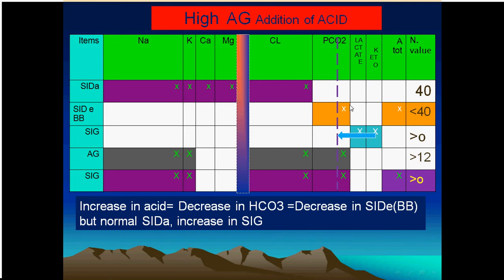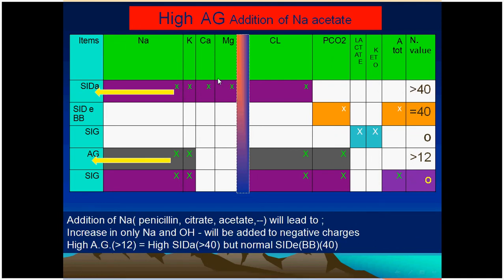Sometimes sodium lactate or sodium acetate is added. Sodium increases, making the difference larger than 40 — this is alkalosis, with an increase in the hydroxyl group. Sodium acetate dissociates to give the hydroxyl group. In this case, the bicarbonate does not increase and the buffer base is unchanged, but the strong ion difference increases. So I identify the alkalosis from the strong ion difference, not from the buffer base as in the previous example. The pH will be alkalotic.